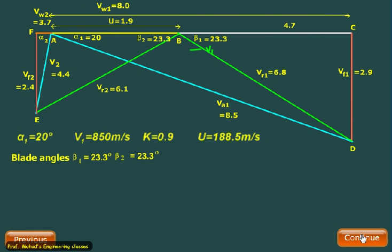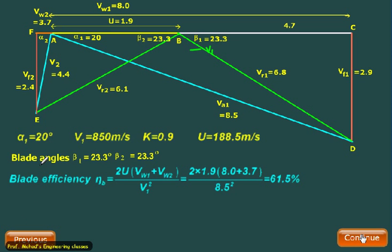Now once we have known this value, our answers will be like this: the blade angle beta_1 and beta_2 both are equal to 23.3°. Blade efficiency is given by 2 times u (Vw_1 plus Vw_2) upon V_1 squared. You have to use plus sign if Vw_2 is acting on the opposite side of Vw_1.